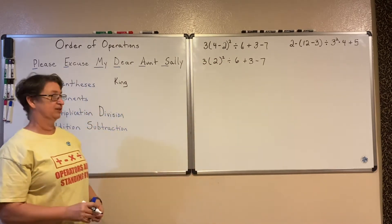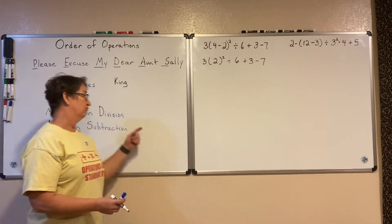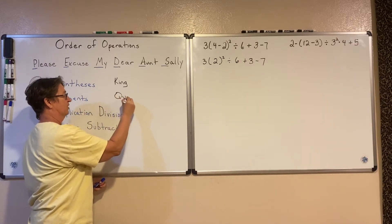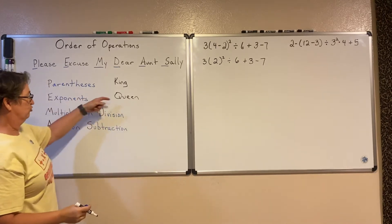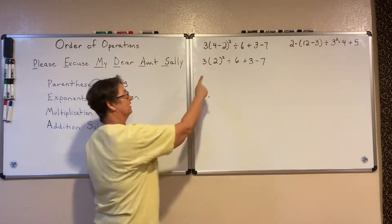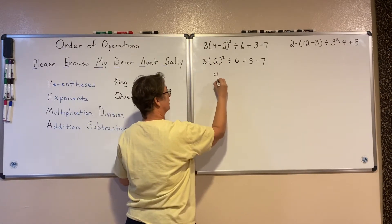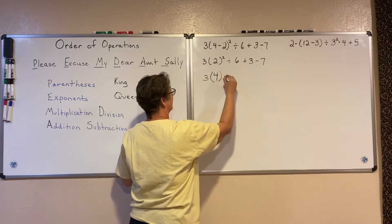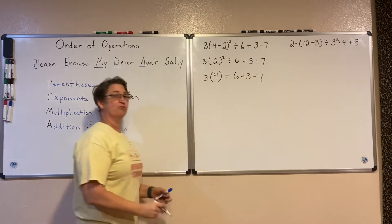We've now killed off the king — he had that hunting accident — so the queen takes over. Our exponents are our queen. We're going to look at and take care of the exponents next. So 2 squared is equal to 4. Now we have 4 times 3, and everything else stays exactly the same.